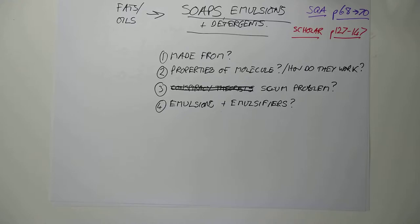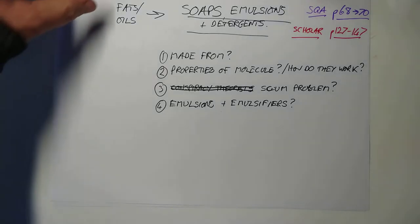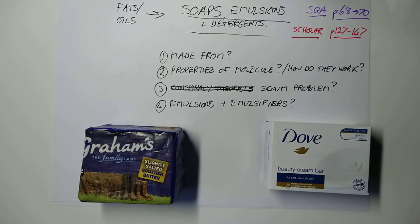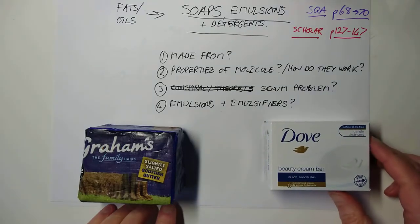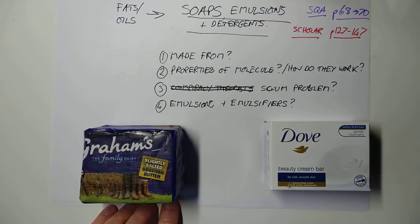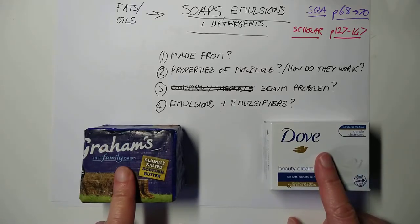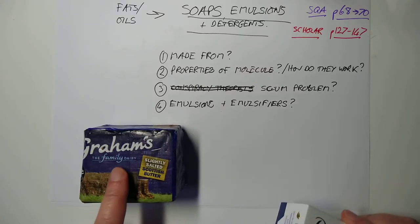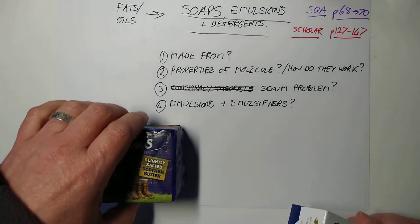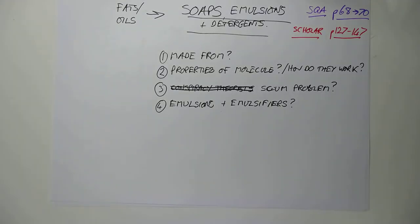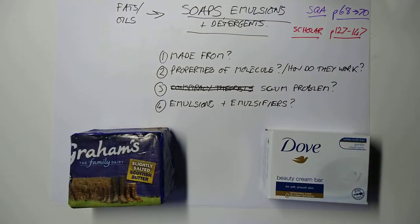So first, before we start, here's a quick word from our sponsors. Grahams Butter and Dove Soap. You see, I did say there was a degree of irony. It turns out that we make soaps from fats and oils, and then use the soap to clean up the fat and oil. Isn't the world a very circular place? I'm going to have to go and put the butter back in the fridge.